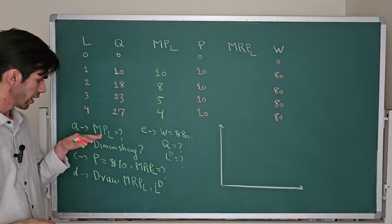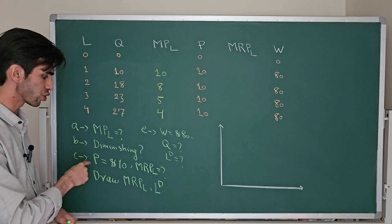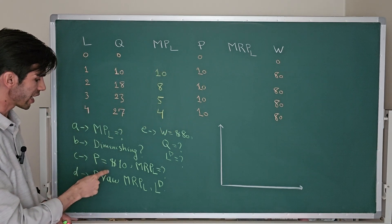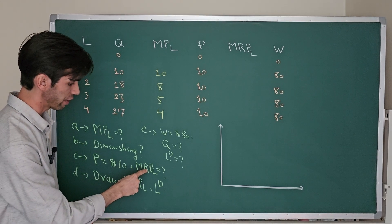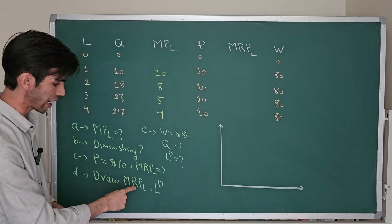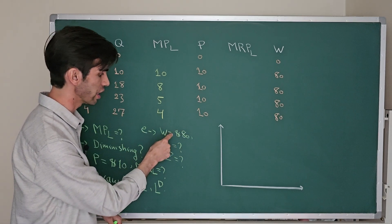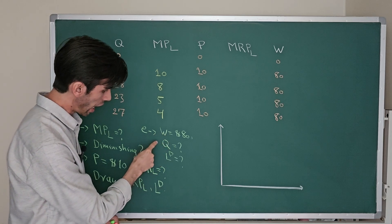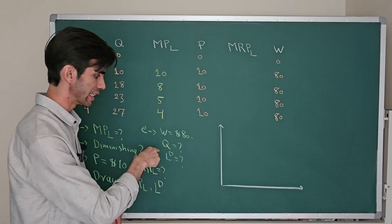The question asks: A, calculate the marginal product of labor. B, do you observe the law of diminishing marginal return in the marginal product of labor or not? C, if the price for each cake is $10, calculate the marginal revenue product of labor. D, draw the marginal revenue product of labor curve, which is equal to the labor demand curve. And E, if the wage rate is $80 per labor per day, how many cakes should this bakery produce and how many labor should this bakery employ.